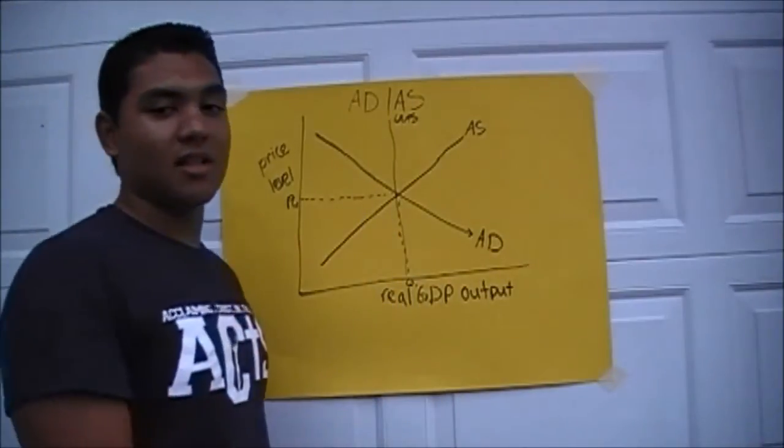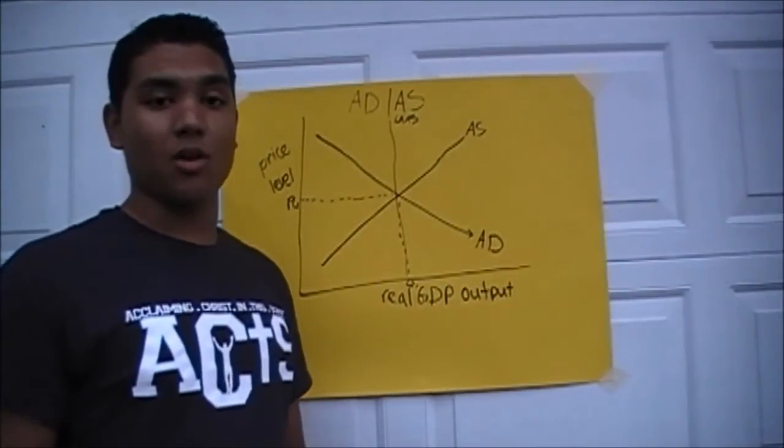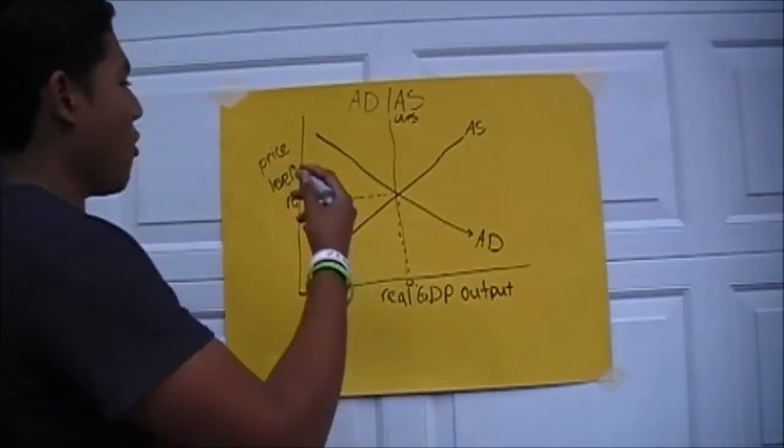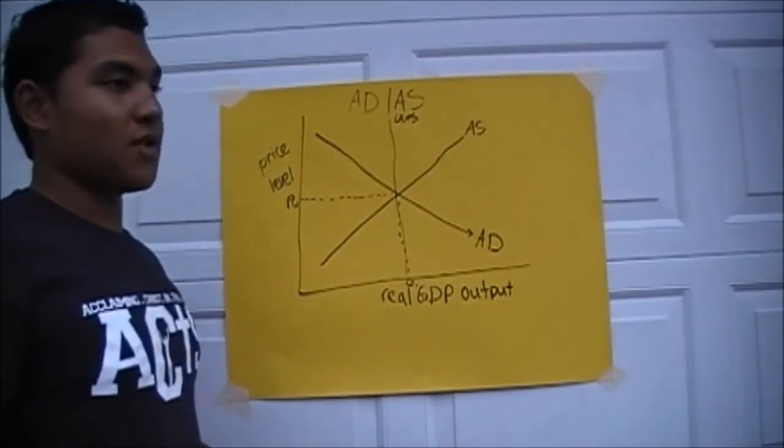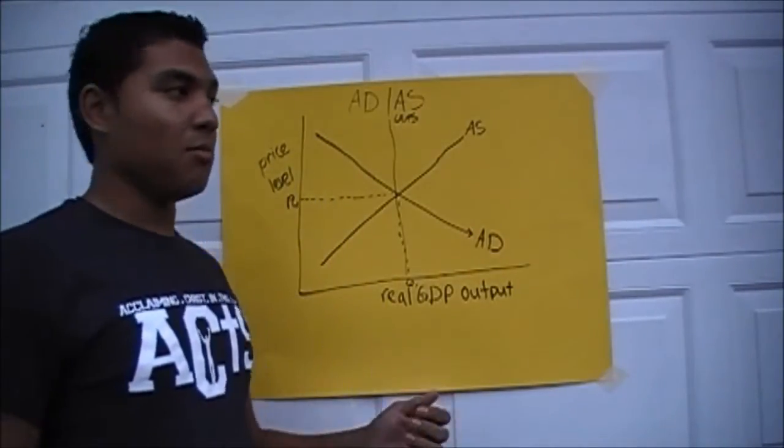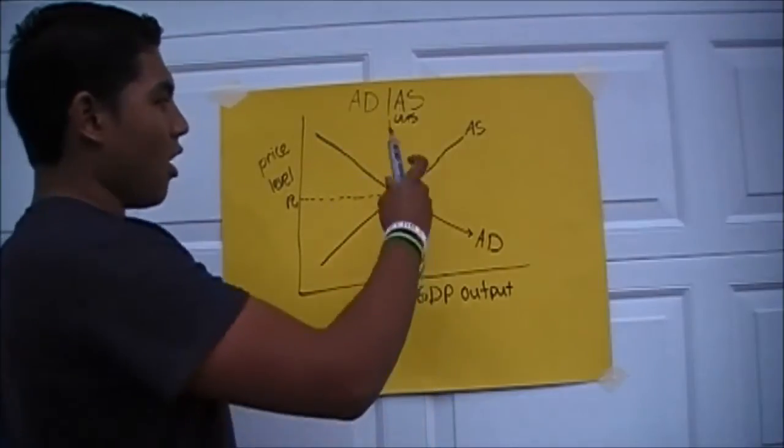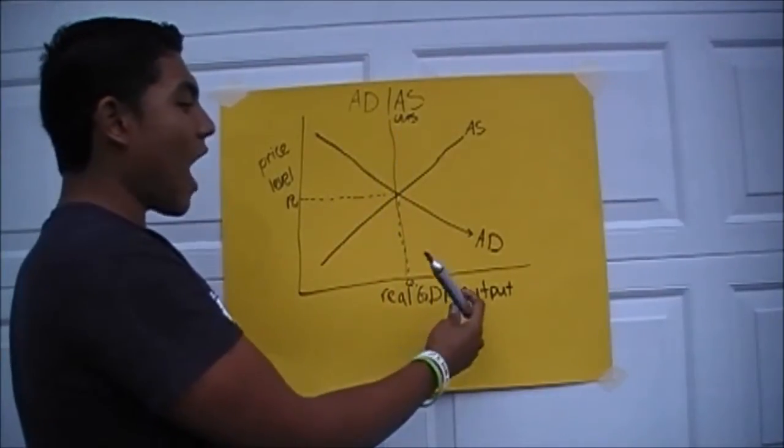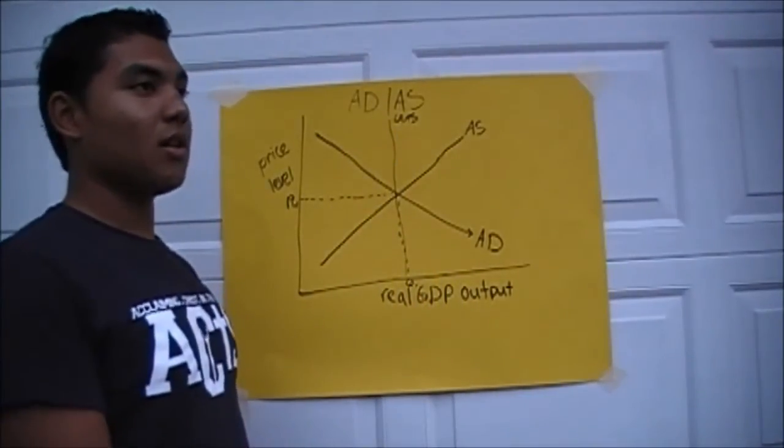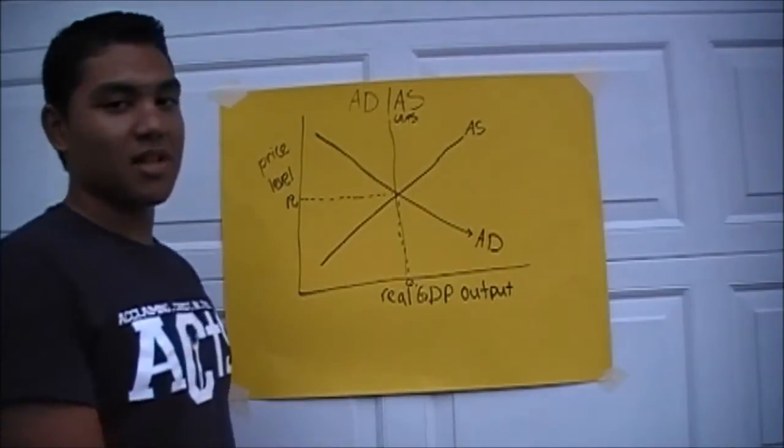Okay, so what LRAS means is everything that'll be produced in the long run. So when price level moves, it's the only one that's going to be moved on this graph, on the LRAS. Output's never going to move. So no matter what, the quantity is always going to be the same.